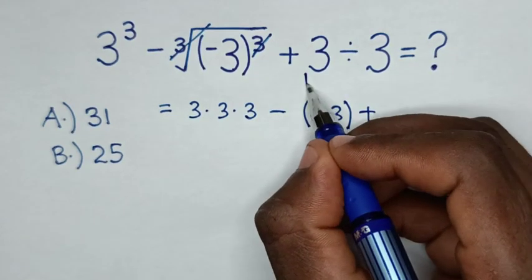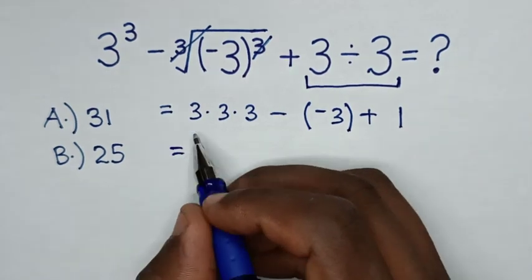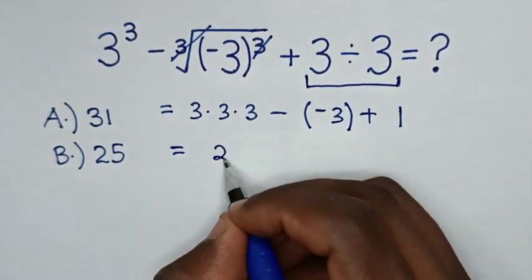Then, we will deal with this division 3 divided by 3 which is 1. Then, it will be equal to 3 times 3 times 3 is 27.